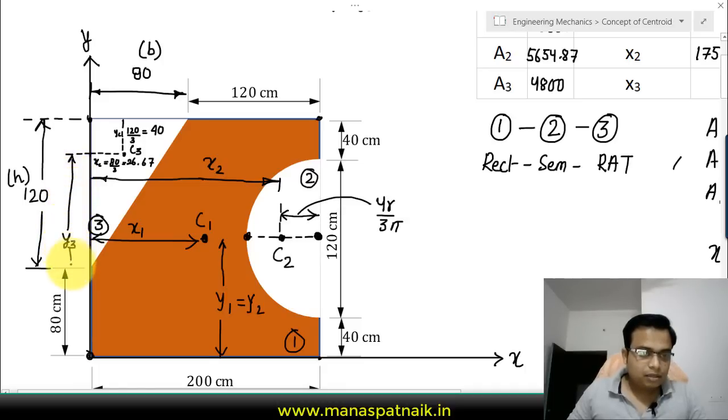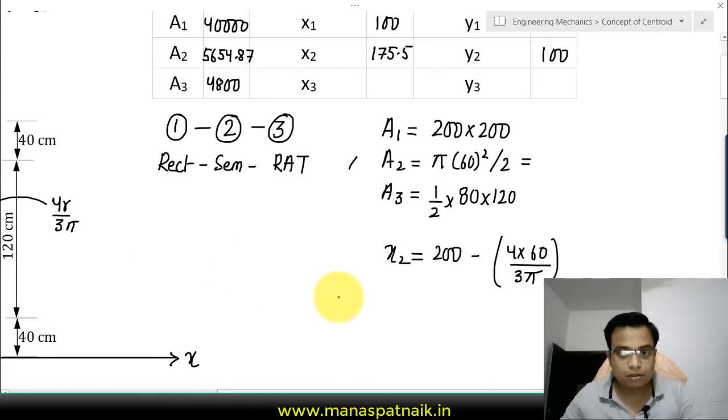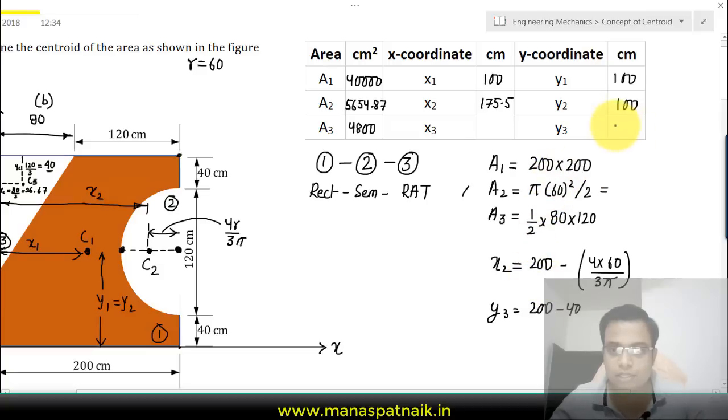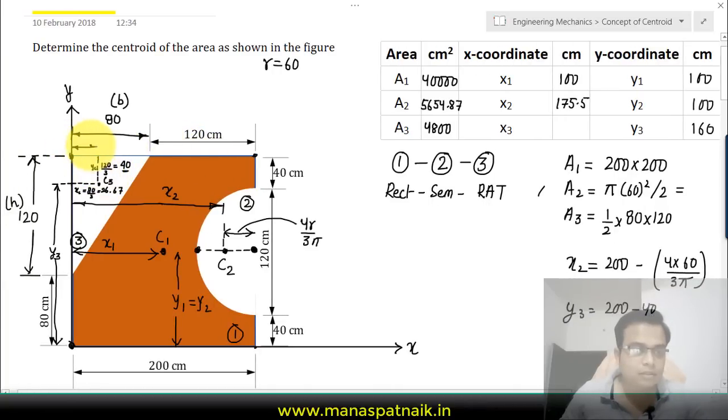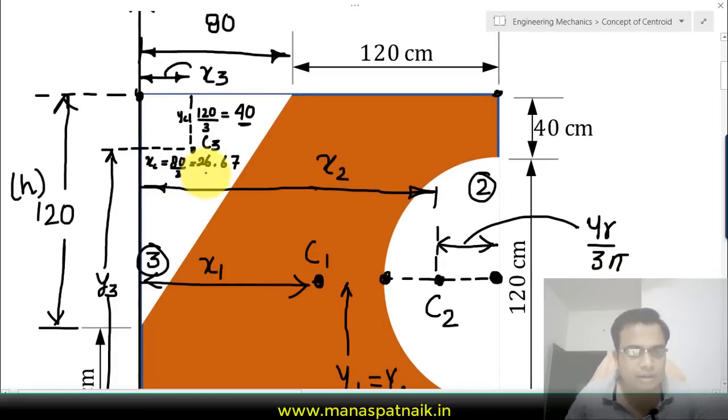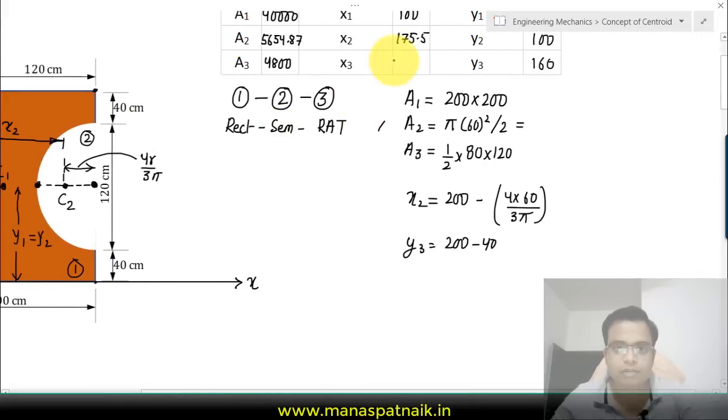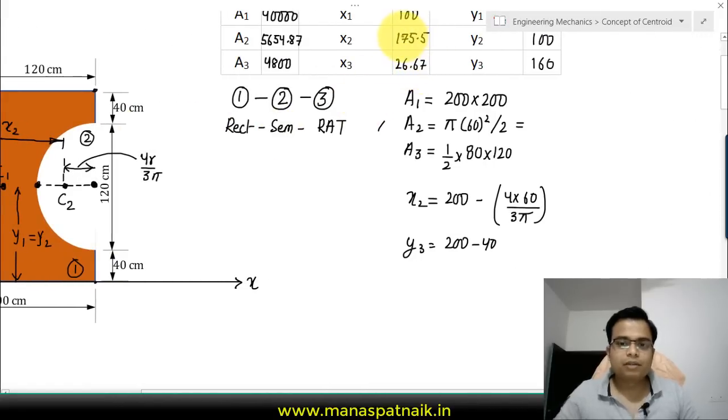This is y3. y3 is equal to, from here to here, that's 200 minus 40, so 200 minus 40 gives you the value of y3, which is 160. What about x3? x3 is this 26.67 which we have already calculated.